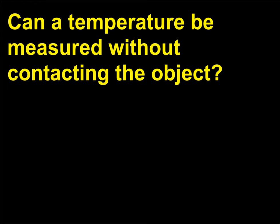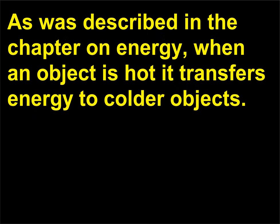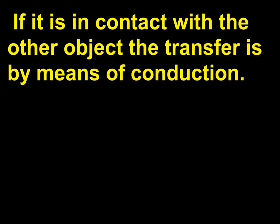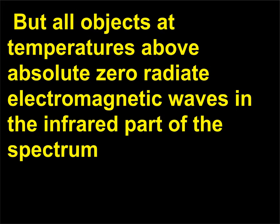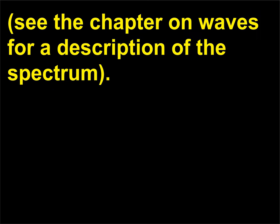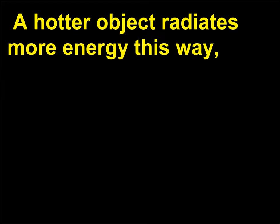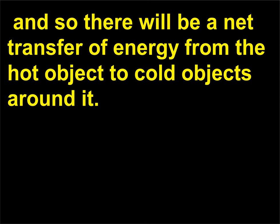Can a temperature be measured without contacting the object? As described in the chapter on energy, when an object is hot it transfers energy to colder objects. If it is in contact with another object, the transfer is by conduction. But all objects at temperatures above absolute zero radiate electromagnetic waves in the infrared part of the spectrum. A hotter object radiates more energy, and so there will be a net transfer of energy from the hot object to cold objects around it.